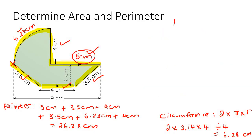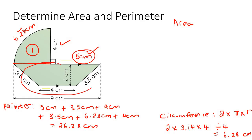Now for area, what we'll do is divide this shape up into different shapes. We're going to put a line there — so we've got a quarter circle as shape number one. Then we can think of this as a triangle for shape number two, then a rectangle, and then another triangle.